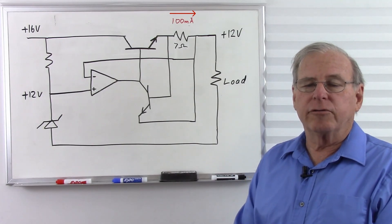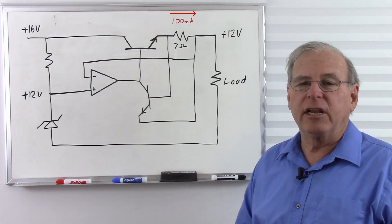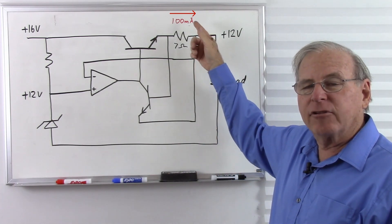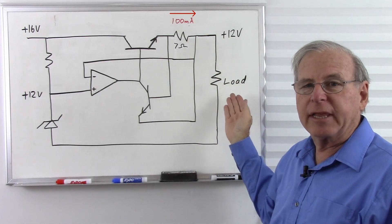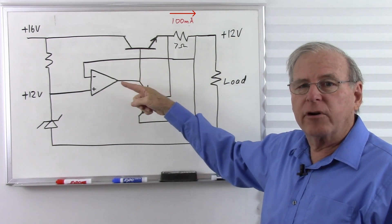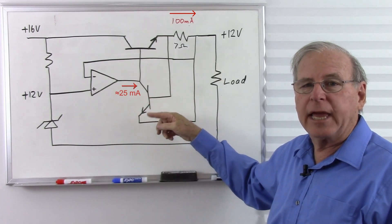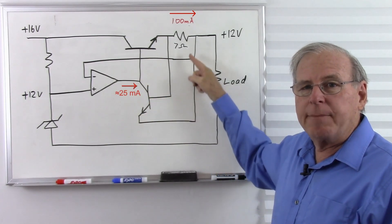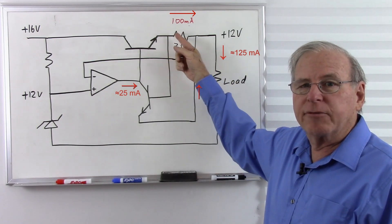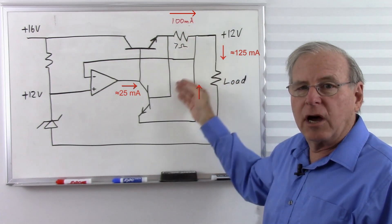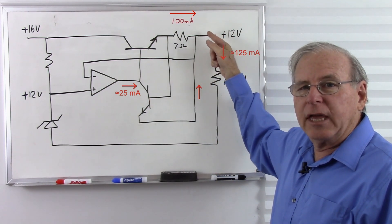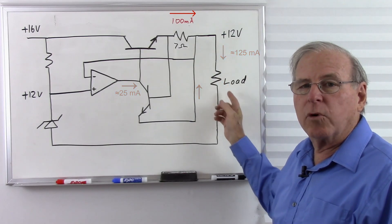If you build this and take measurements, you might find you're getting a little more current than expected — about 120 to 130 milliamps instead of 100. Why? The op amp is sourcing a considerable amount of current, about 20 to 30 milliamps, which bypasses the emitter resistor and goes directly to the output. So you get 100 milliamps through the resistor triggering the transistor, plus 20 to 30 milliamps extra from the op amp.